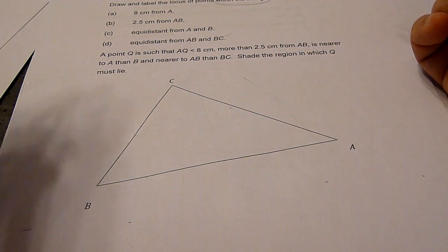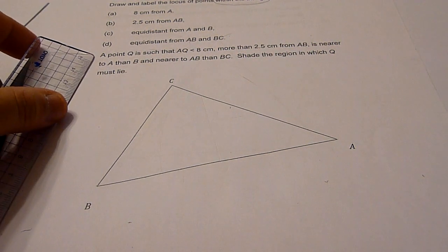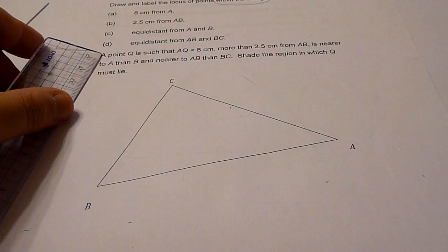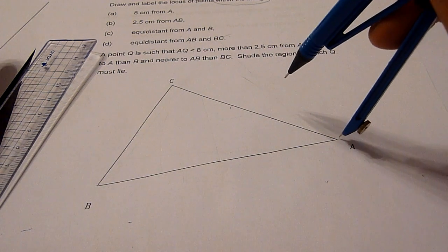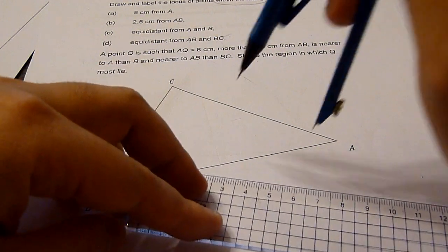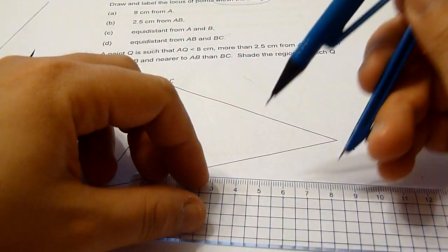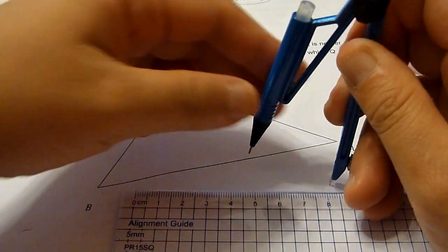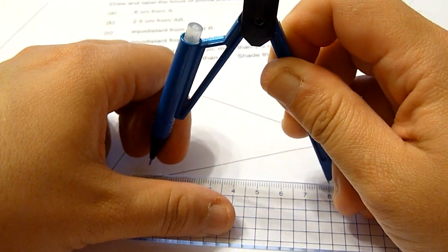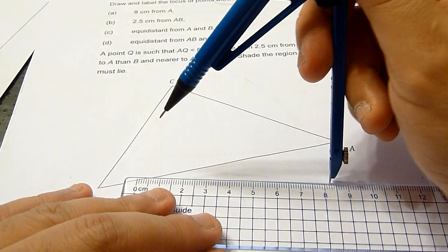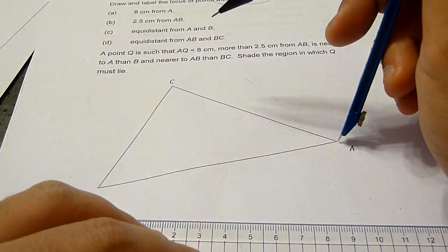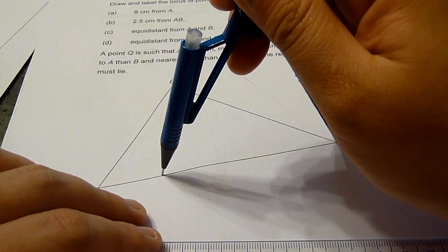First, to draw the locus of points within a triangle which are eight centimeters from point A, it means we are going to draw a circle around point A. First, we measure the length, which is eight centimeters.